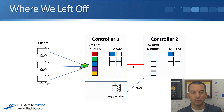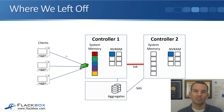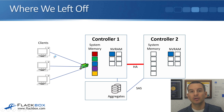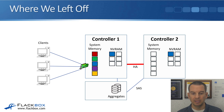With reads, whenever a read request comes in, the controller which owns the aggregate that the data is on will first look in system memory. If the data is there, it will serve it from system memory. If the data is not in system memory, it will fetch it from disk and send it to the client. If it does that, the data now becomes hot, so it will go into the top slot in system memory and everything else will be bumped down a slot.